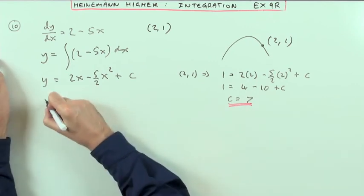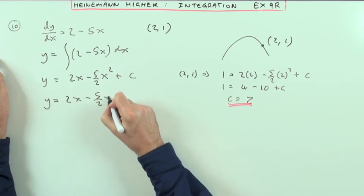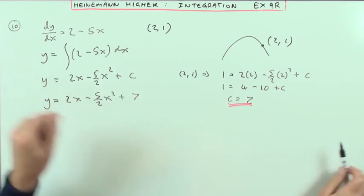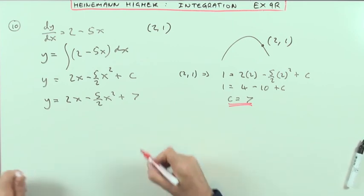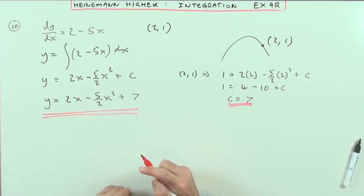So the equation is, quite simply, the original equation must have been 2x minus 5 upon 2 x squared plus 7. Just leaving it in that jumbled up form. Maybe I should have put it as 7 plus 2x minus 5 upon 2 x squared.